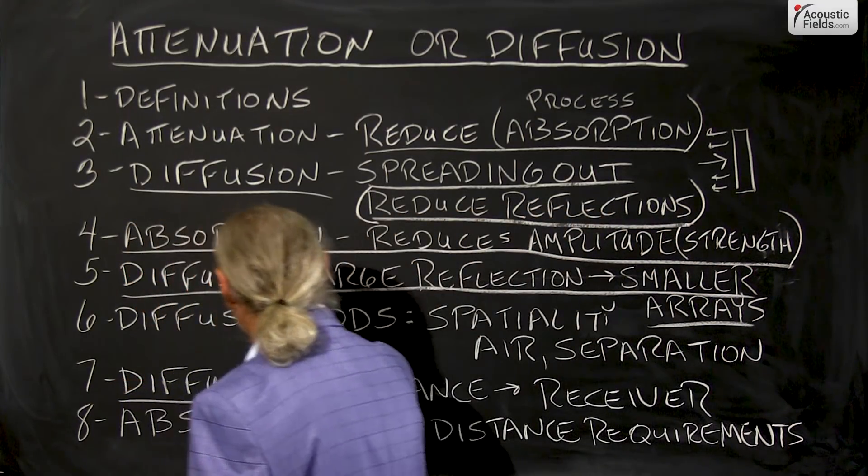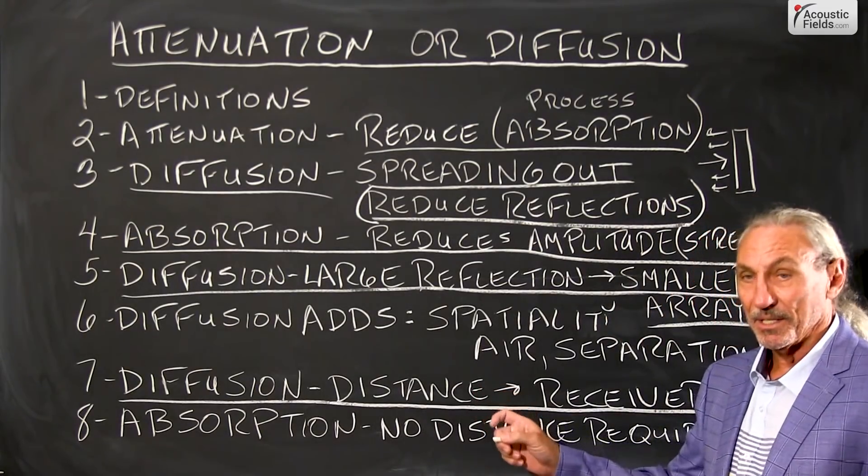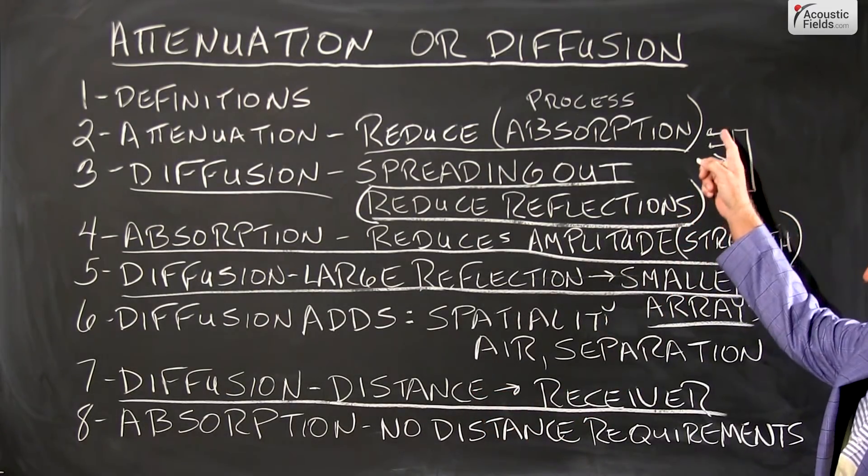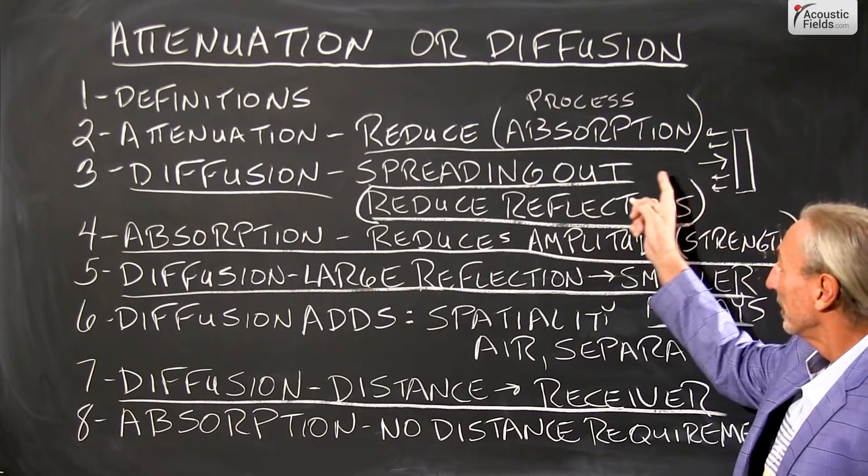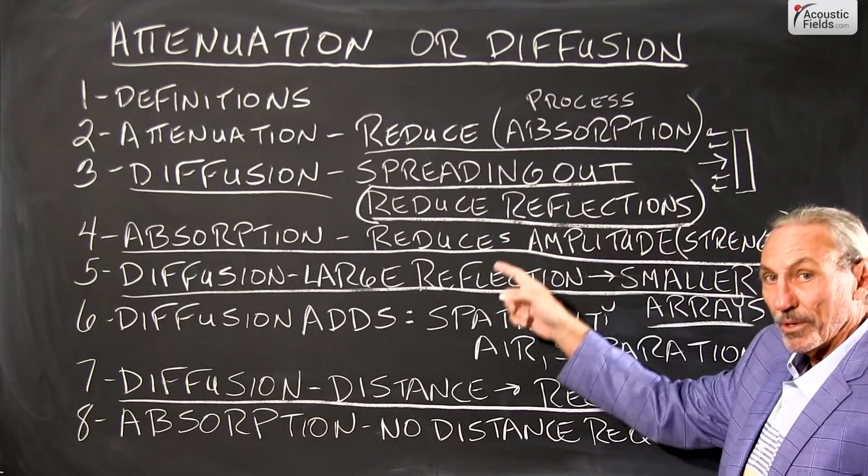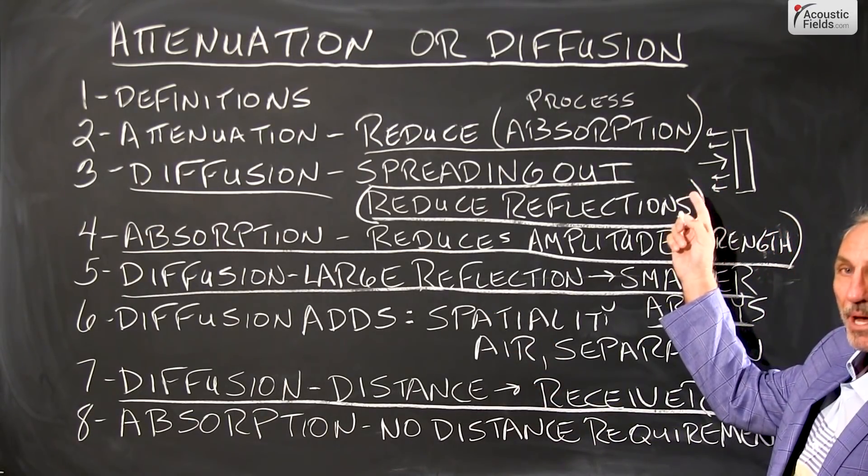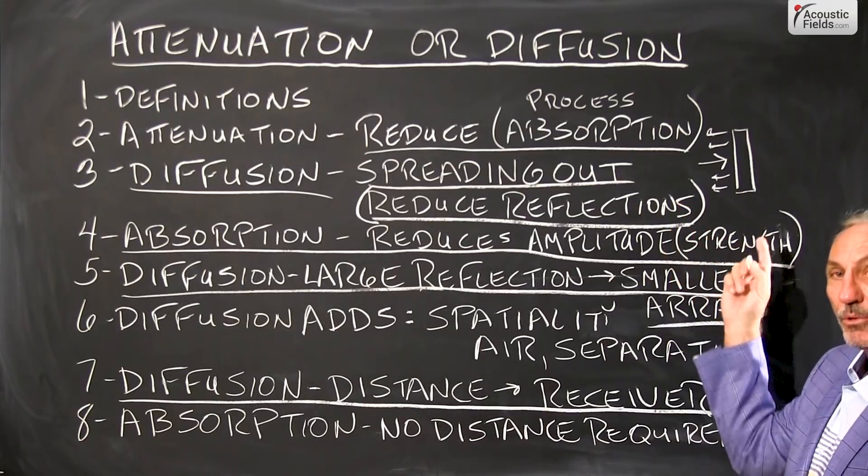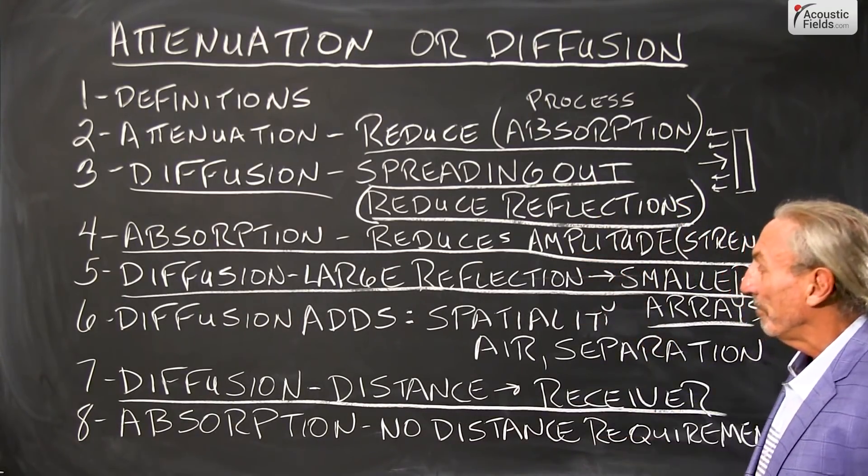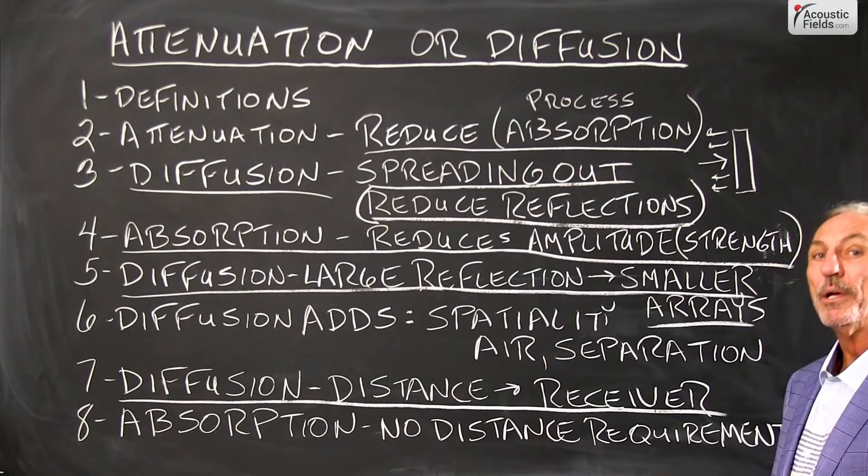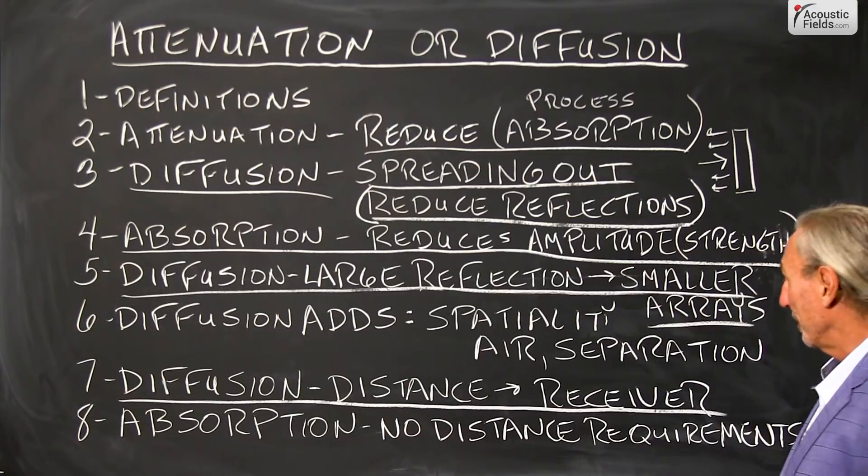What do we have with diffusion in terms of requirements? Well, distance because this energy that comes out of the diffuser has to have distance for it to fully form. So if you're too close to it, you won't reach the maximum benefit of the diffuser, you only get part of the frequencies. So the goal is to be sitting far enough away from the diffuser that you can realize its full impact and we can help you with those distances.